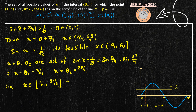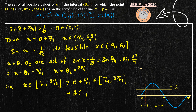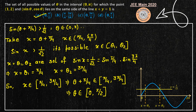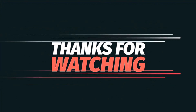Since x equals theta plus pi by 4, we have theta plus pi by 4 belonging to (pi/4, 3pi/4). Subtracting pi by 4 throughout gives theta belonging to 0 to pi by 2. Therefore, when theta lies in the interval (0, pi/2), the points (1, 2) and (sin theta, cos theta) lie on the same side of the line x plus y equal to 1. That's the solution — hope you understood, thank you, like, comment and subscribe.